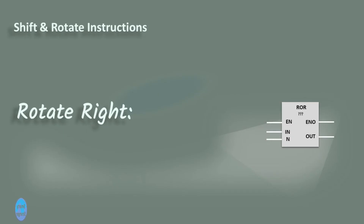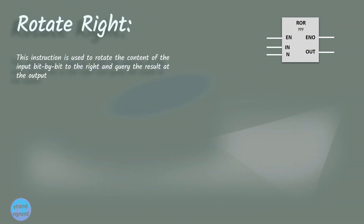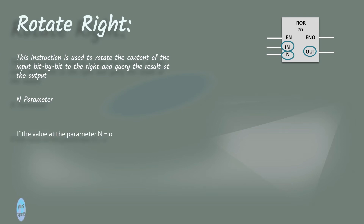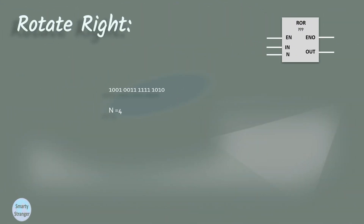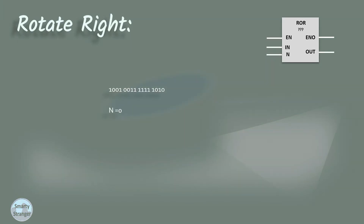Our next instruction is the rotate right instruction. This instruction is used to rotate the content of the input bit by bit to the right and query the result at the output. The N parameter tells the instruction how many bits to rotate. If N is zero, the input value is copied to the output. In the example, N equals 4, meaning the instruction will rotate 4 bits to the right. If N is 0, the same input value appears at the output.